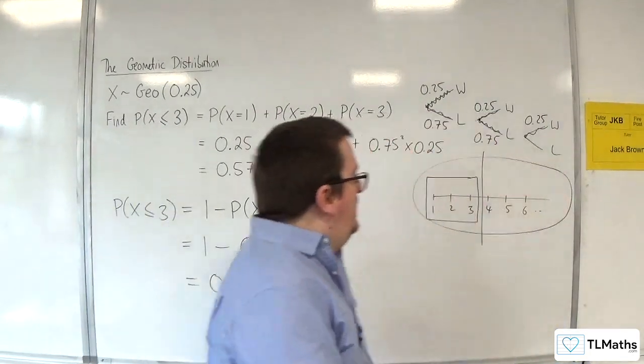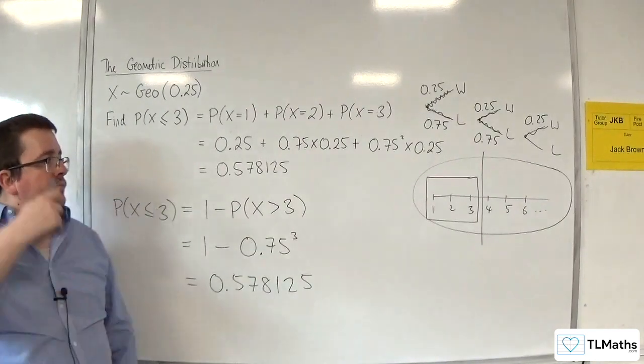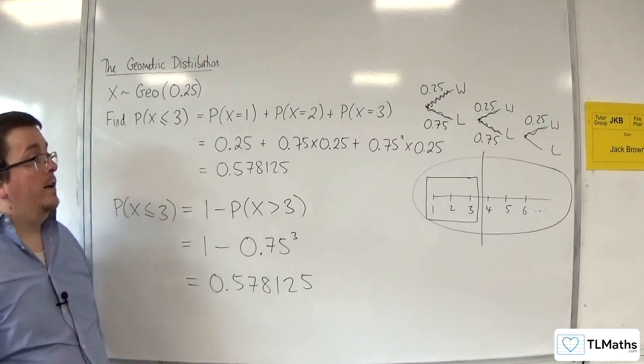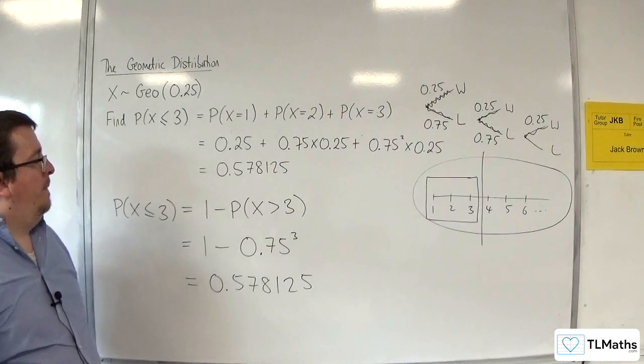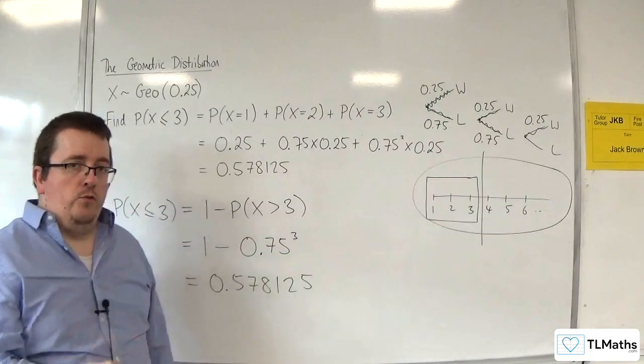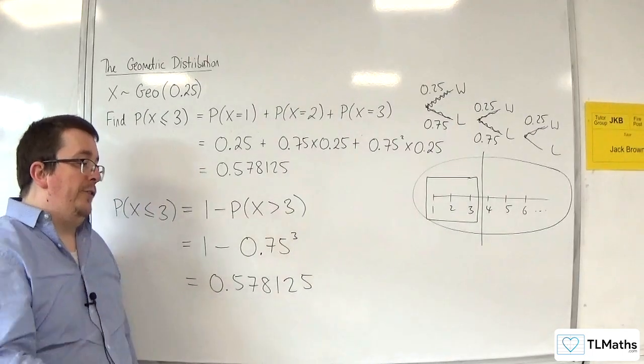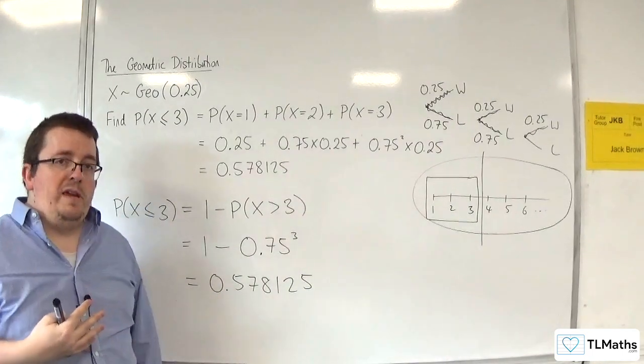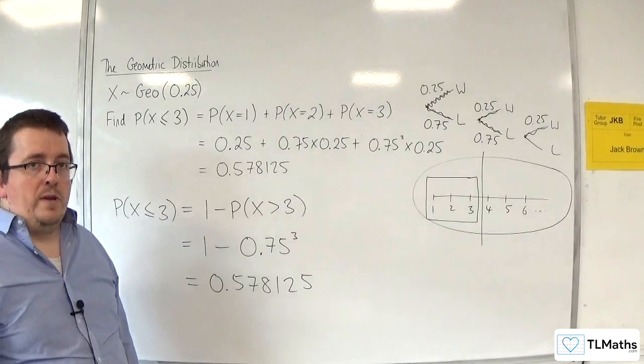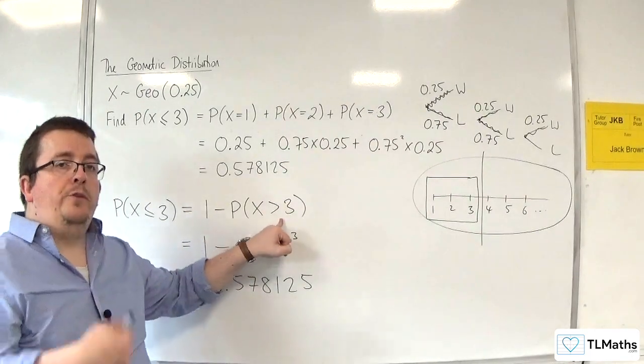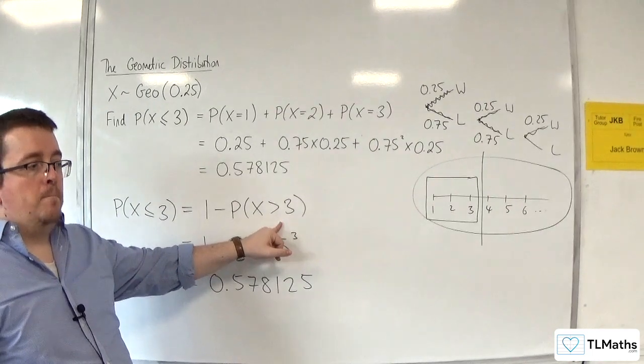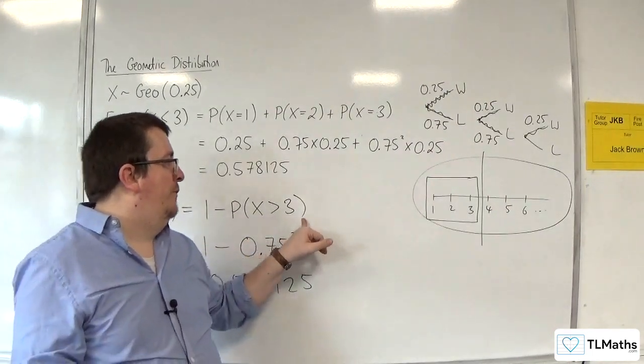Now, this one can be quite difficult to kind of get in your head. Conceptually, it doesn't look like it should work. But, essentially, what you are saying is that if I want the probability of X being greater than 3, that's the probability that I win my first attempt after the first 3 games have been played. So, that means that must be that I lose my first 3 games. Because this is the probability of X being equal to 4, 5, 6, 7, 8, all of those added together. So, that's got to be that I lose my first 3 games.